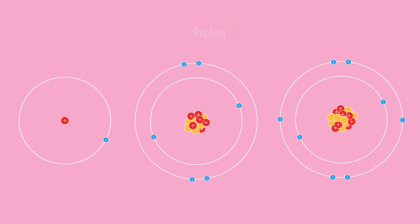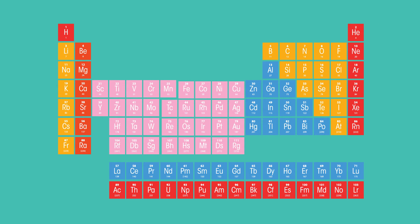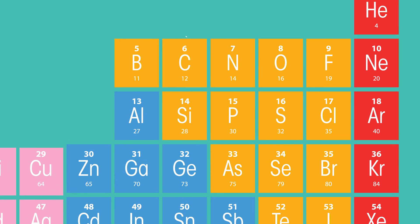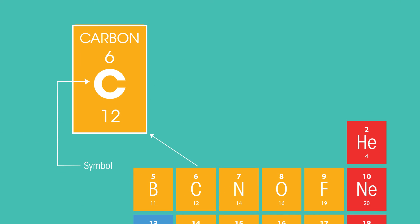First things first, the number of protons in an atom determines which element it is. No two elements have the same number of protons, ever. Each symbol in the periodic table is an abbreviation of a different element. For example, C stands for carbon.